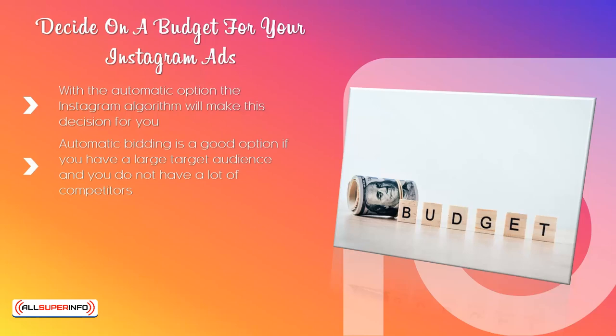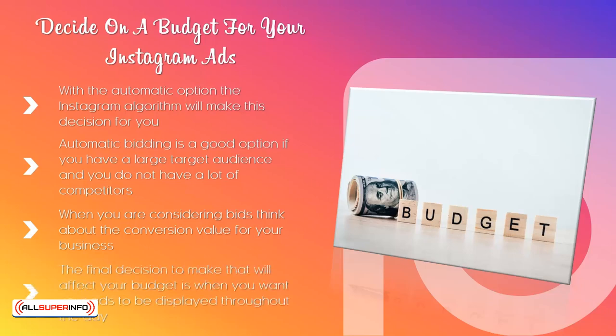For smaller audiences and high competition, we recommend the manual option for bids, which will also stop you from bidding too high. When you are considering bids, think about the conversion value for your business. Only you know this, and you cannot rely on Instagram for this because they don't know. Be aware that not all audiences offer the same value, so you need to adjust your bids based on the audience you are targeting. The final decision that will affect your budget is when you want your ads to be displayed throughout the day. There is a standard option, or you can choose the more expensive accelerated option, which will make the pace of delivery faster.